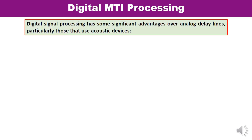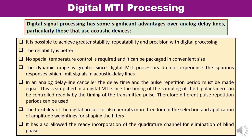Digital signal processing has significant advantages over analog delay lines, particularly those which use acoustic devices. It is not possible to achieve stability with analog delay lines, but digital signal processing makes it possible to achieve greater stability, repeatability, and precision. Reliability is better, no special temperature control is required, and it can be packaged in a convenient size.